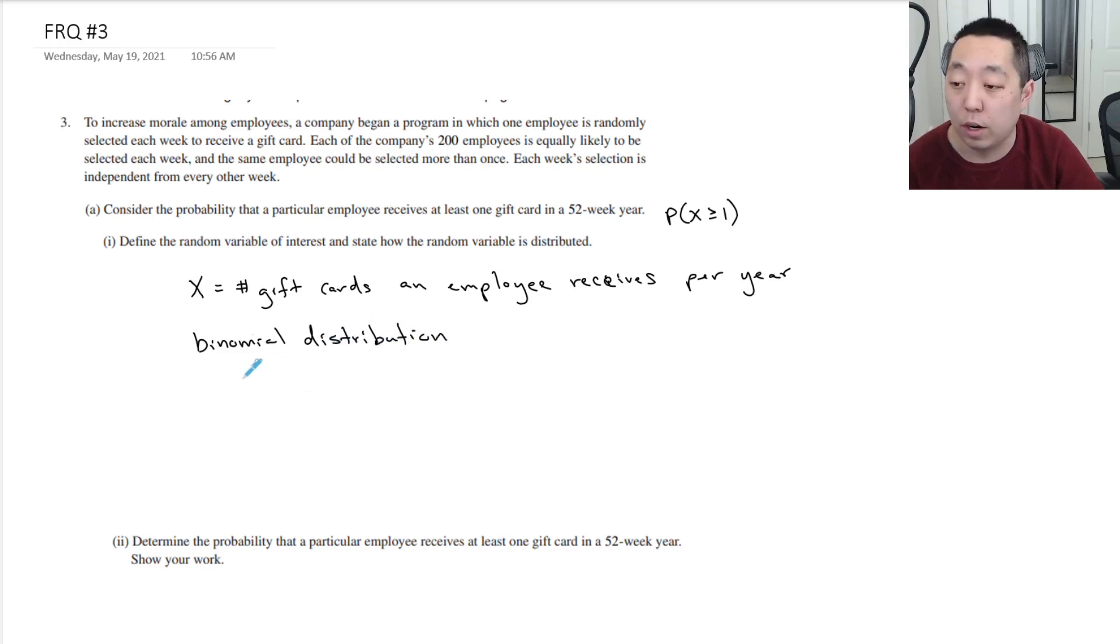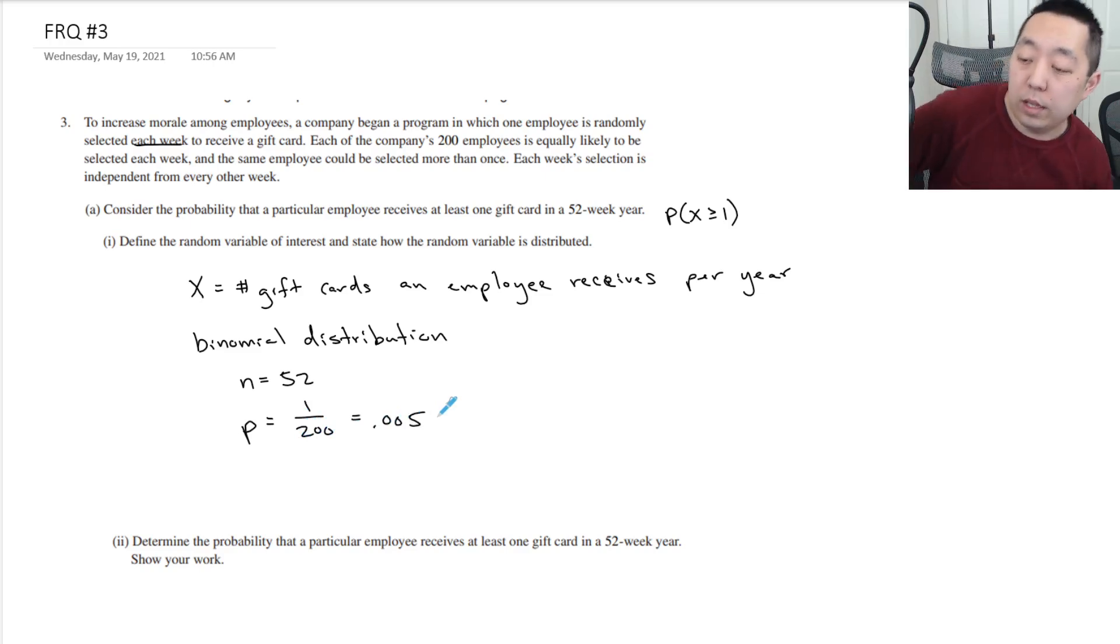And the parameters are the number of trials, which would be 52. They do it once per week, so 52 times per year. And the probability of winning a gift card is one out of 200, or 0.005. And those are the parameters of the binomial distribution. That's enough to talk about the parameters.